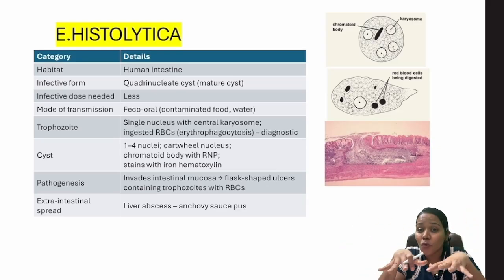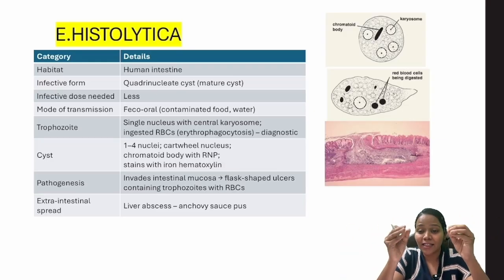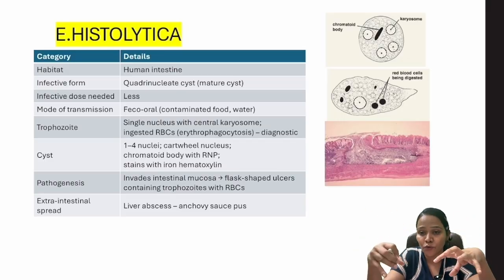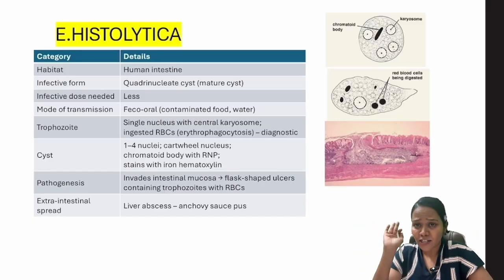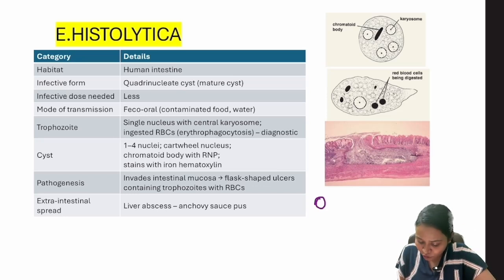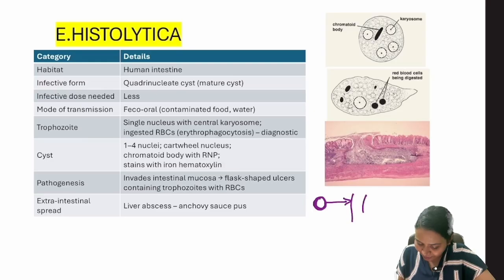Anything that resides in the intestines and causes infection via the food route — the infective form is going to be a cyst, no doubt. So here's the story: a cyst goes via the feco-oral route, enters the mouth, crosses the stomach, and arrives at the intestine.